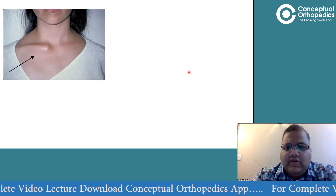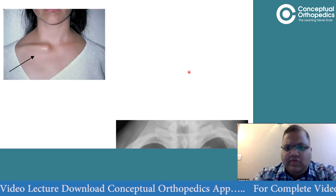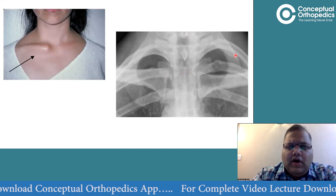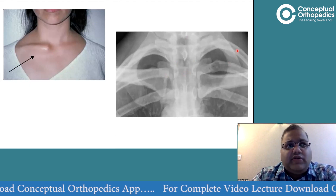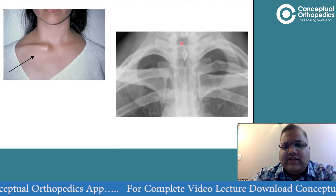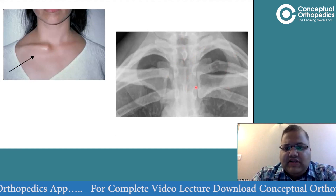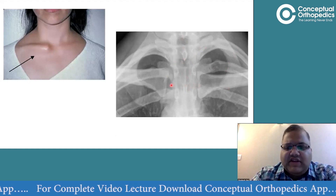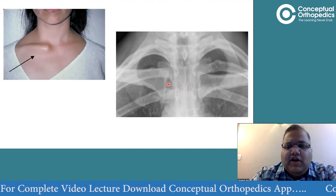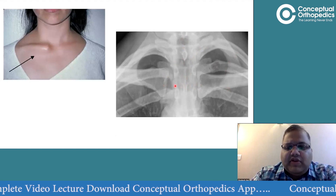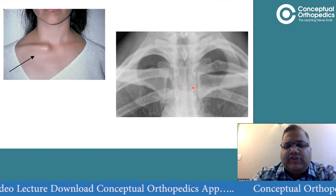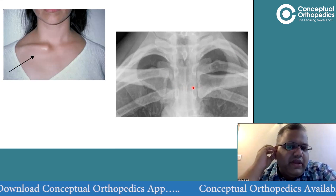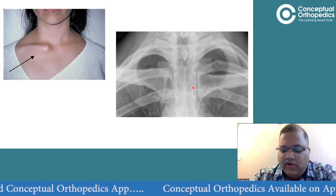They might also ask you to interpret an X-ray. On the radiograph, always compare both sides from the midline - check the distance between each clavicle and the midline. If there is an increased distance on one side compared to the other, that indicates sternoclavicular dislocation. This is assessed on a true PA or AP view of the chest.